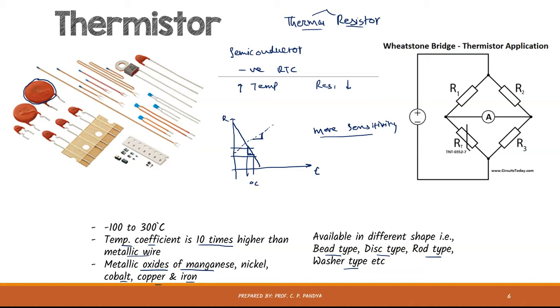Thermistors are very smaller in size compared to that of RTD. It is smaller in size and it is because their resistivity is high compared to the resistance of wire or conductor.